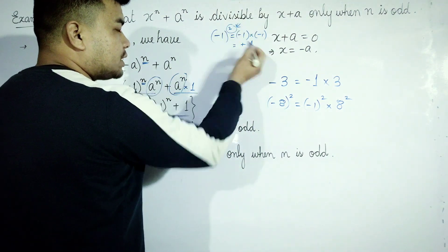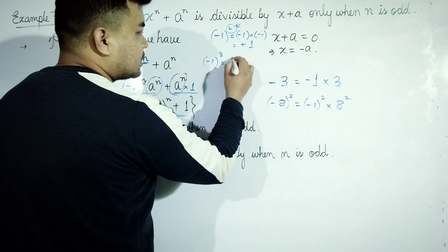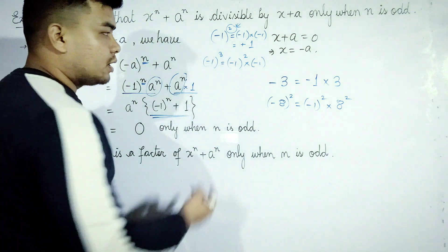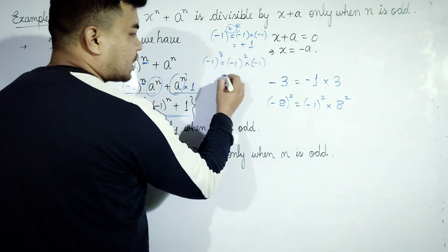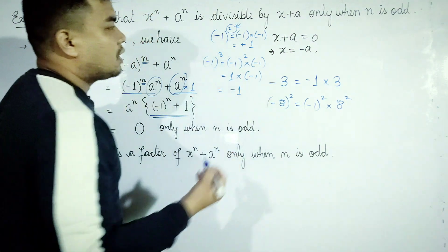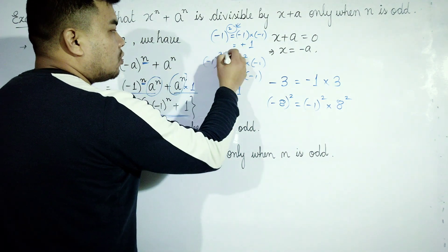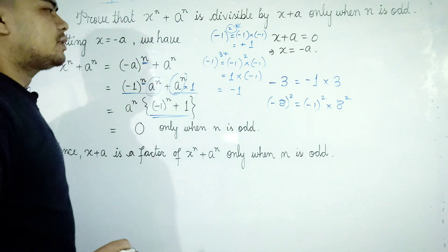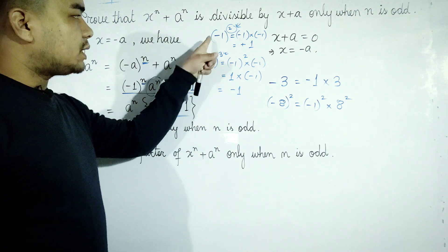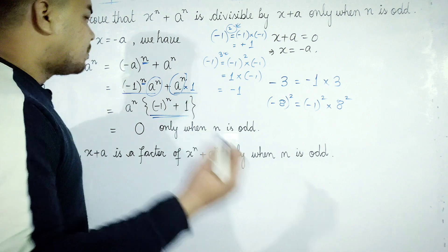For the cube case, minus 1 whole cubed equals minus 1 squared times minus 1. Minus 1 squared is 1, and 1 times minus 1 is minus 1. So minus 1 to the power n equals minus 1 when n is odd.